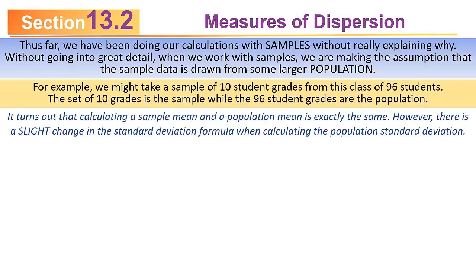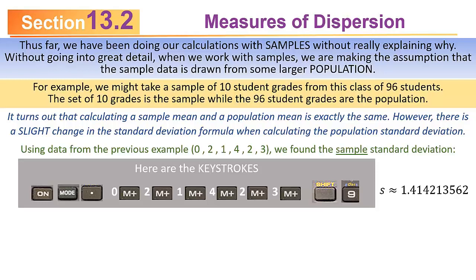It turns out that when we calculate the sample mean, it's the same as a population mean. It doesn't matter whether it's from a sample or from the population. But there is a slight difference when doing standard deviation. There's a slight change in the standard deviation formula when calculating the population standard deviation. Whereas it never mattered with the distinction between sample and population with means, it does matter for standard deviation.